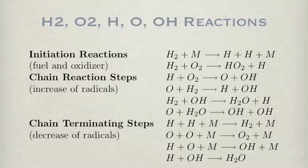The initiation reactions are those where stable species such as hydrogen and oxygen form radicals. The chain-reaction steps are those in which one radical species in the reactants produces one or two radicals in the products.